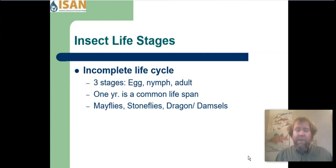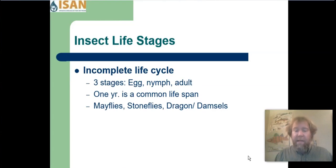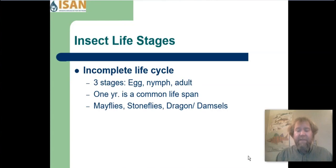Insects can have one of two different types of life cycles. The first is the incomplete life cycle. It has three stages: the egg, the egg turns into a nymph, and then the nymph turns into the adult. One year is a common lifespan, but some aquatic macroinvertebrates, like stoneflies, have a three-year life cycle. Mayflies, dragonflies, and damselflies are other insects that have this type of life cycle.